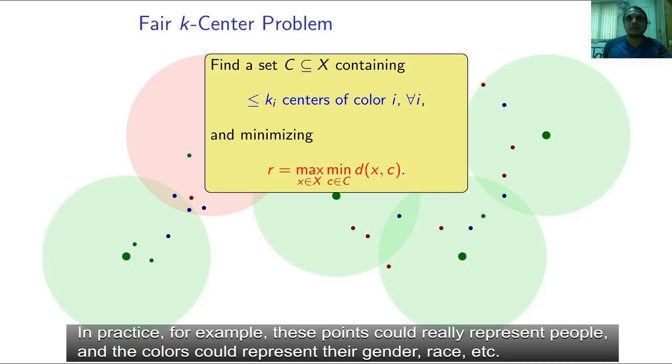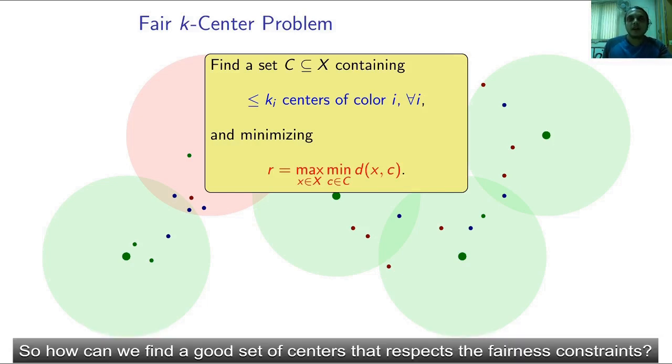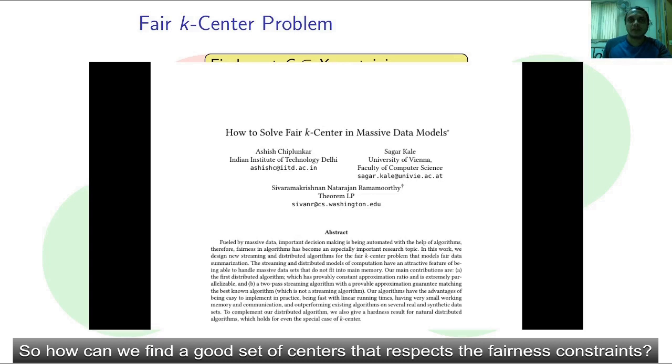In practice, for example, these points could represent people and the colors could represent their gender, race, etc. So how can we find a good set of centers that respects the fairness constraints?